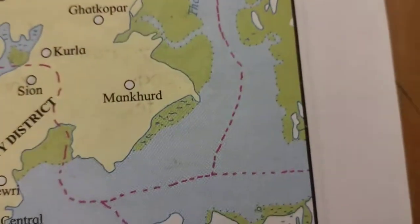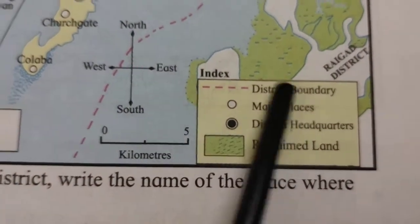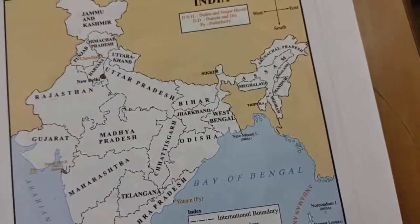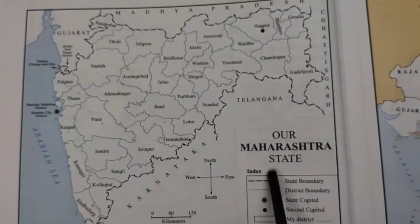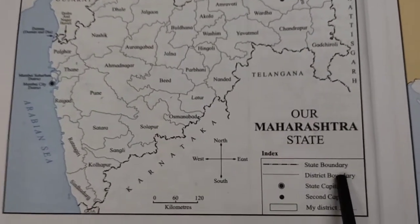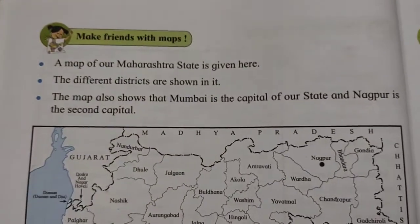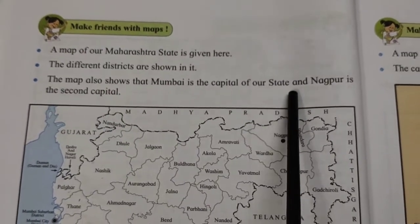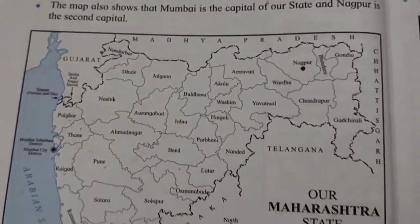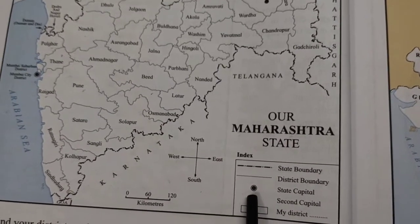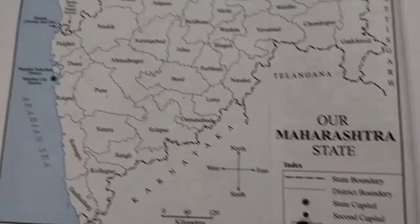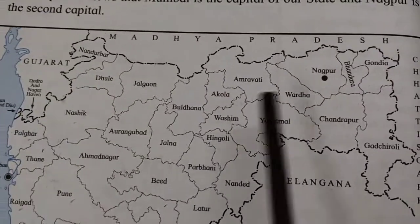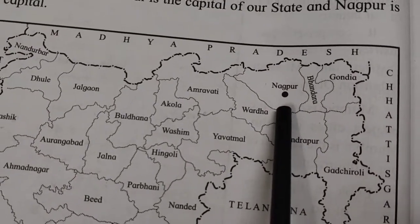We stay in the state of Maharashtra. Here is the map of Maharashtra — you can see our Maharashtra state. The index is given here. The map shows that Mumbai is the capital of our state, shown with a big circle, and Nagpur is the second capital, shown with a small black spot. Different districts are shown on the map.